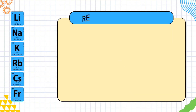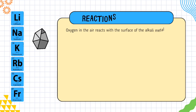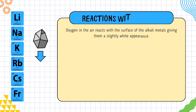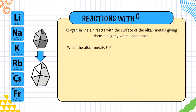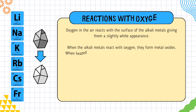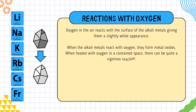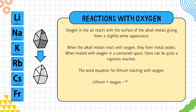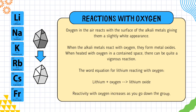Now we will learn reactions of alkali metals with oxygen. Oxygen in the air reacts with the surface of the alkali metals, giving them a slightly white appearance. When alkali metals react with oxygen, they form metal oxides. When heated with oxygen in a confined space, it can be quite a vigorous reaction. The word equation for lithium reacting with oxygen is: lithium plus oxygen → lithium oxide.